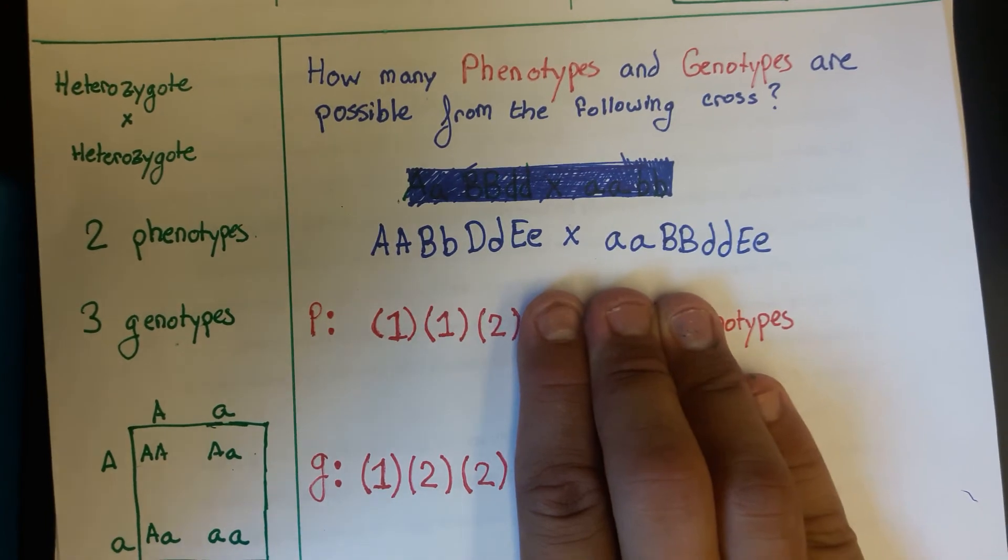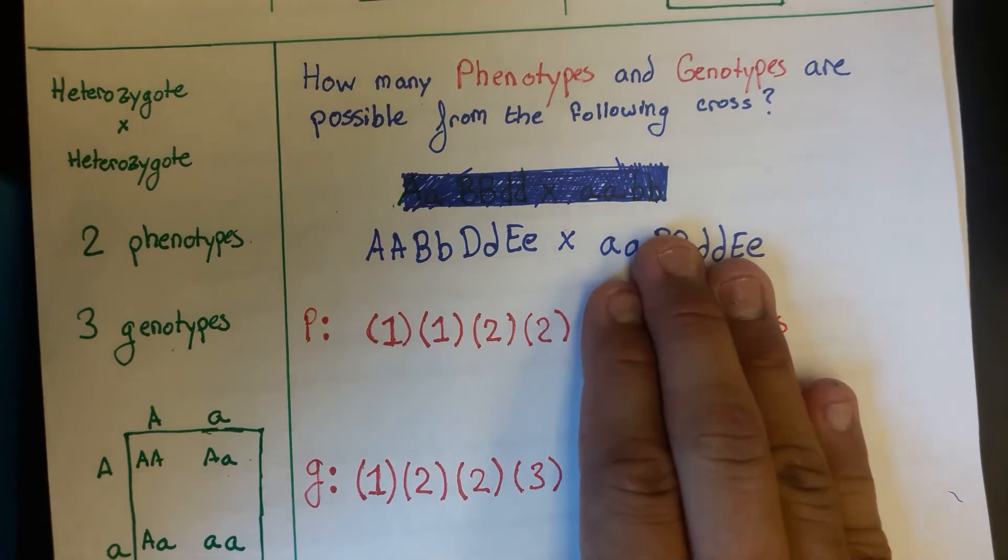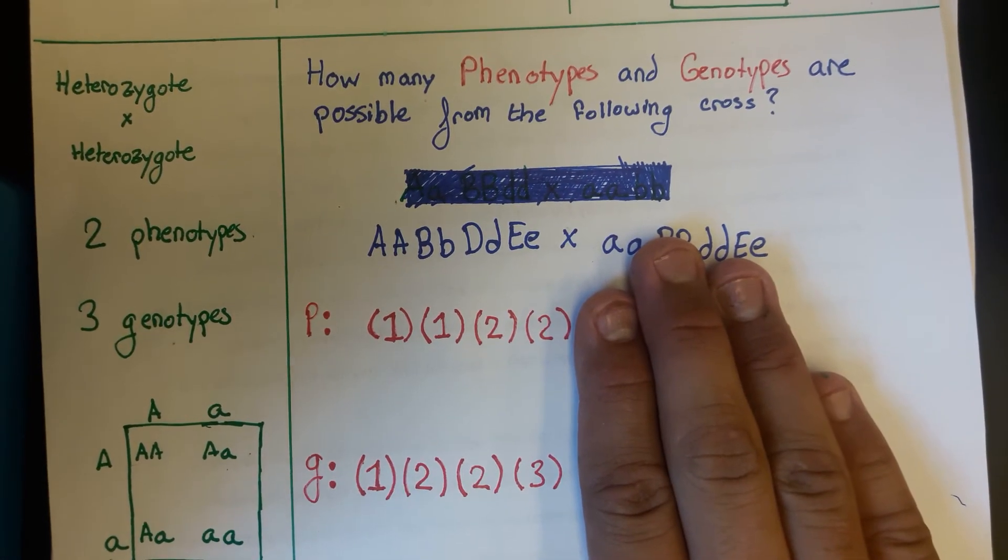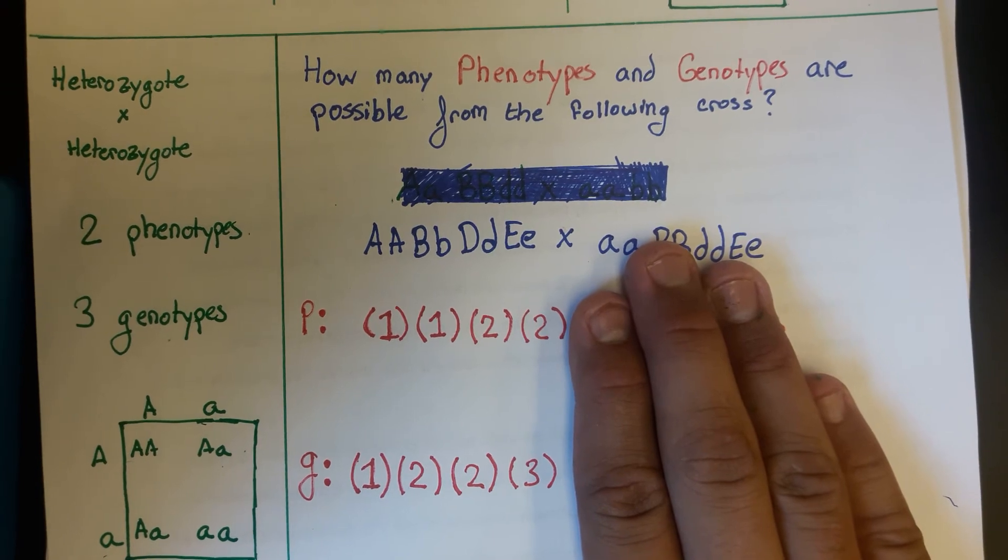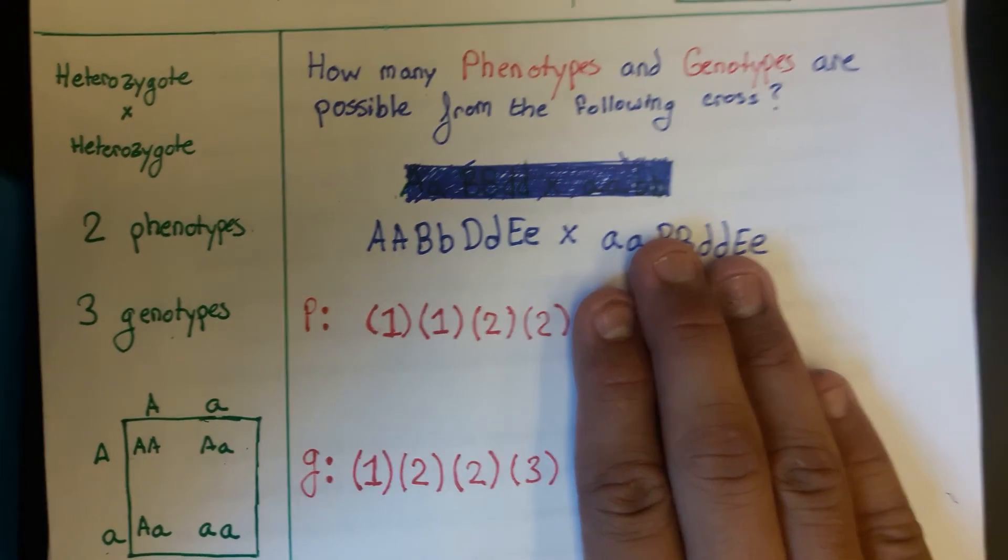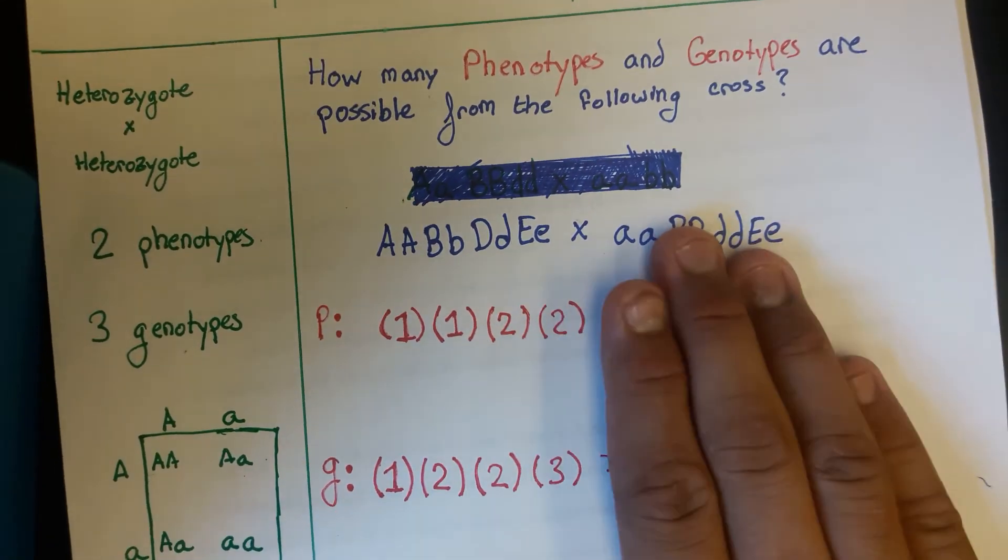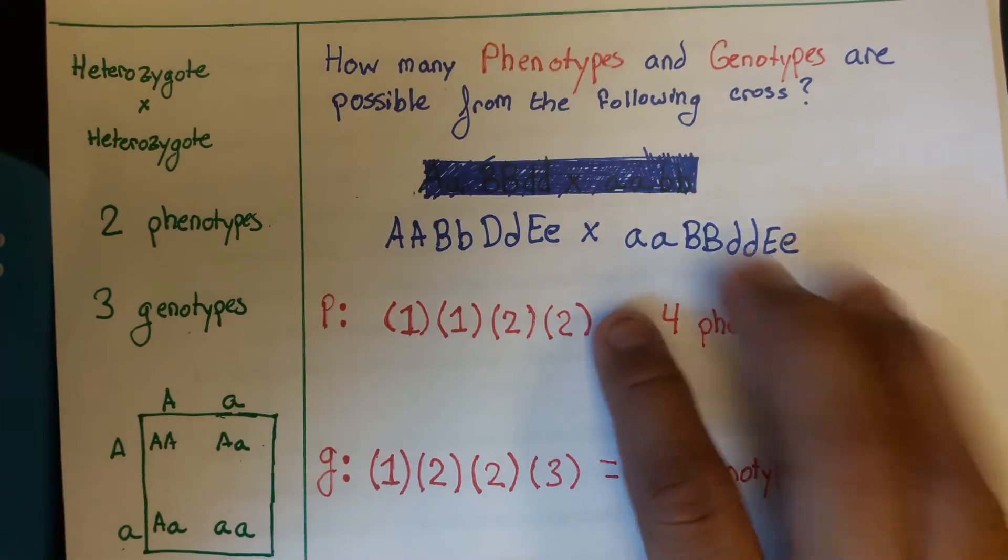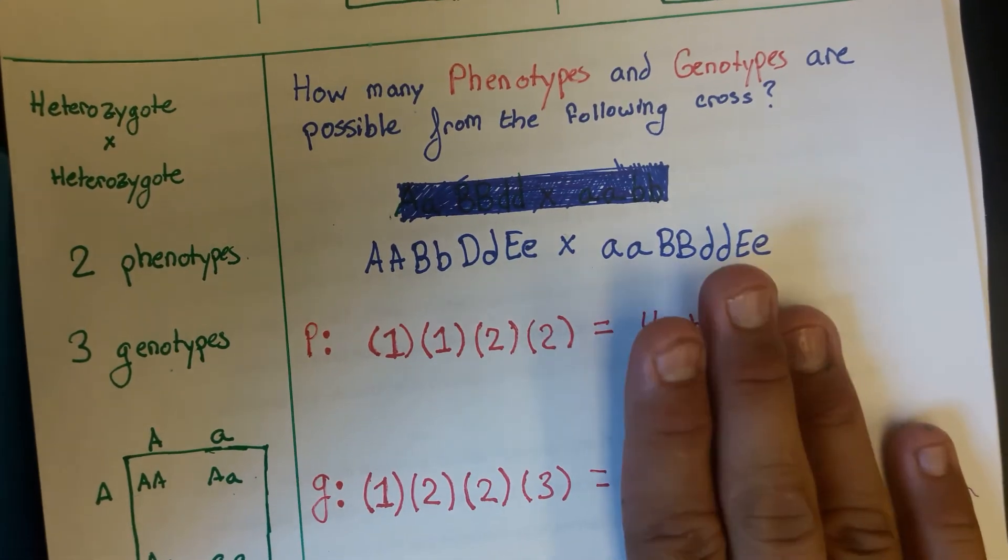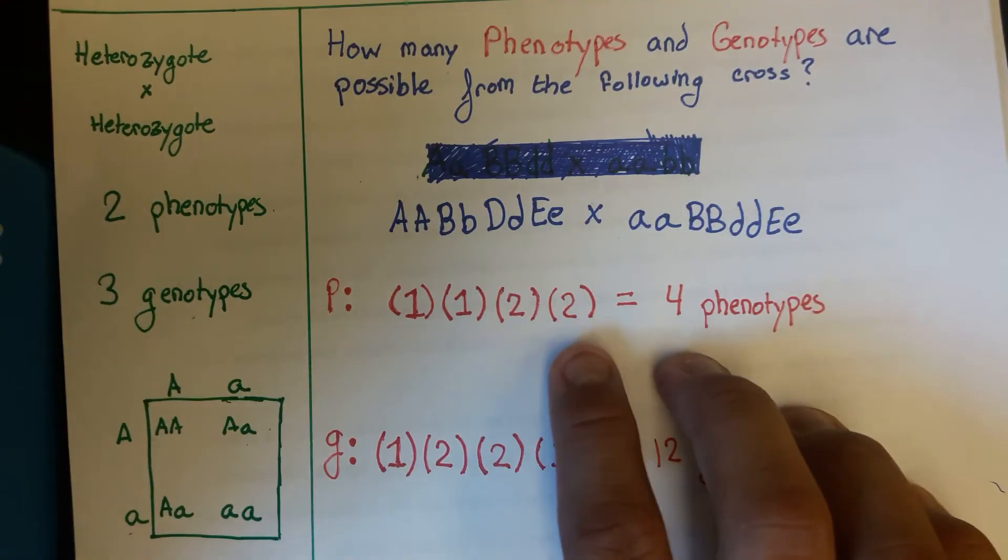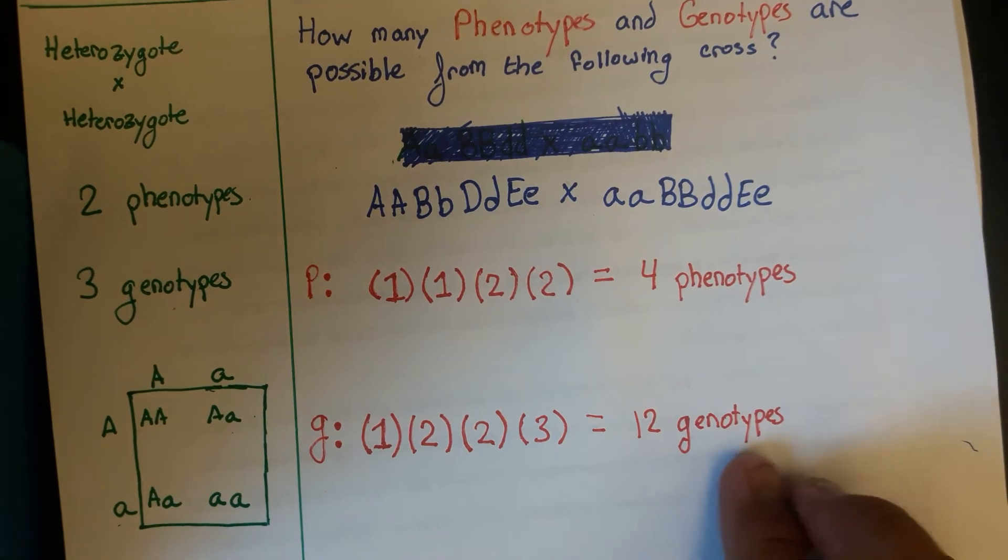And lastly, you have a heterozygote times a heterozygote. That's that very same kind of cross that we talked about in the very beginning. And then you know that the formulas are two and three. So at every loci, you have a number that goes along with it. So there's four loci involved here, A, B, D, and E. And we have four factors, one, two, three, four. These numbers are again coming from that table. And at the end, you want to know how many possible phenotypes and genotypes are possible from the cross. So you just multiply all these numbers together. Four phenotypes is the end result and then 12 genotypes.